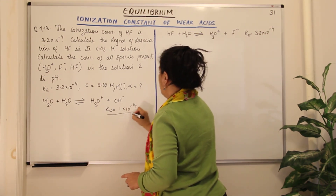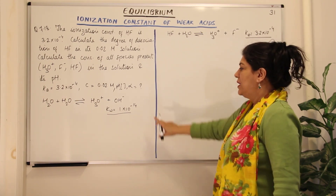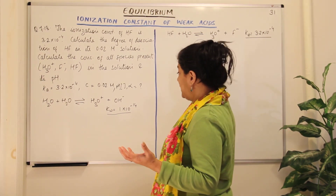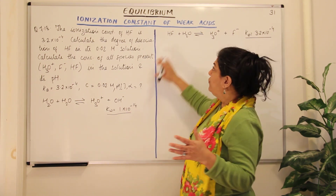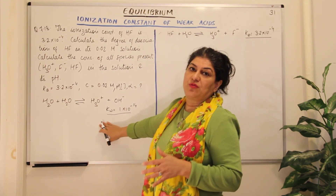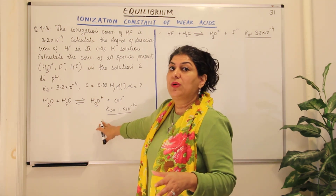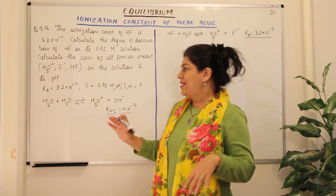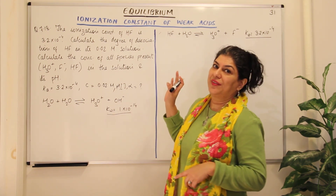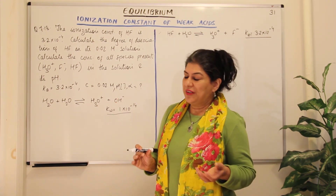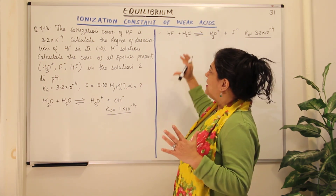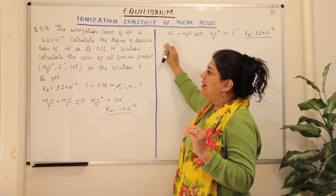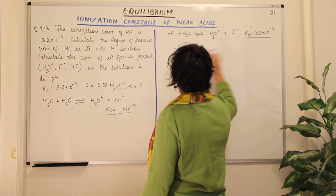Now compare the two equilibrium constants: 10⁻¹⁴ versus 10⁻⁴. Since 10⁻⁴ is larger, the HF dissociation reaction becomes our primary reaction and the water autoionization is the subsidiary reaction. As mentioned in the previous video, the water-water reaction typically has a much lower equilibrium constant and is usually the subsidiary reaction. Having done this step, we know the HF dissociation is our primary reaction.